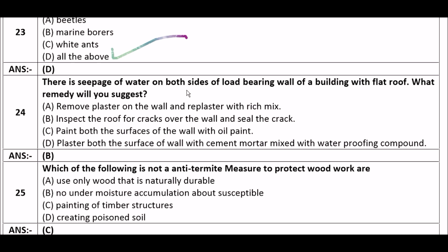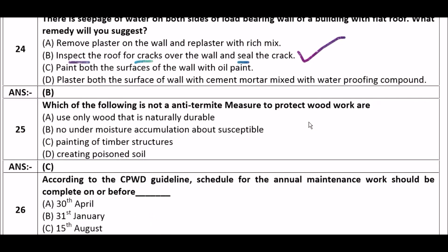Option A: remove plaster on the wall and replaster with rich mix, option B: inspect the roof for cracks over the wall and seal the crack, option C: paint both surfaces of the wall with cement mortar mixed with waterproofing compound. The right answer is option B — inspect the roof for cracks over the wall and seal the crack.